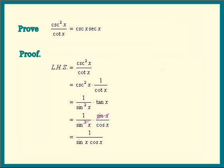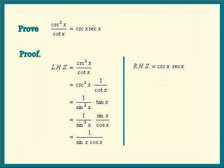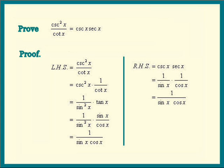Does it look like we hit a dead end? Well, if you think we did, we can just start working with the right hand side and see whether we reach the same conclusion. The right hand side is cosecant x times secant x. Cosecant x is 1 over cosine x, and we do get 1 over sine x times cosine x. Since the left hand side equals the right hand side, we did prove that cosecant squared x over cotangent x equals cosecant x times secant x.